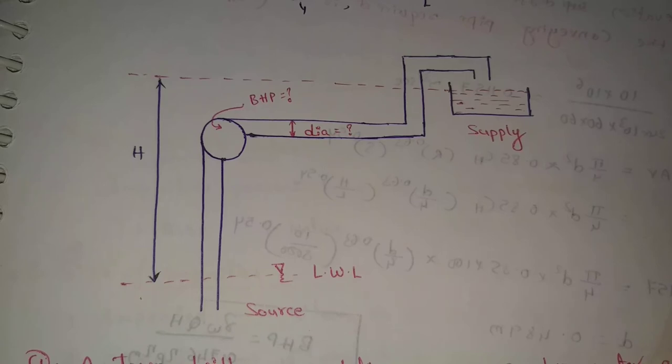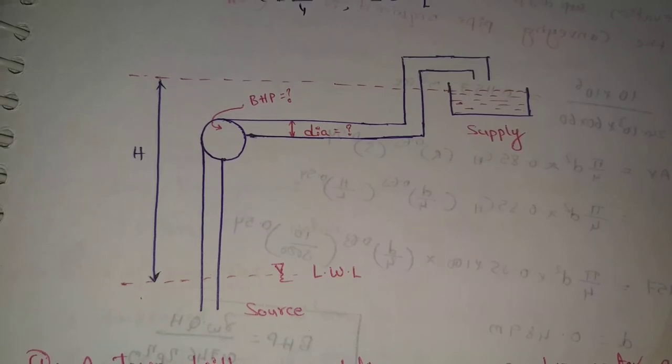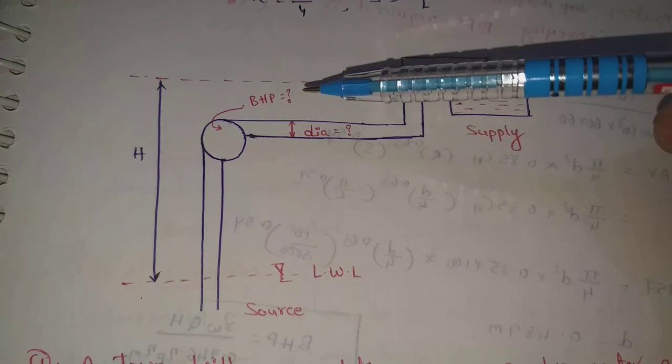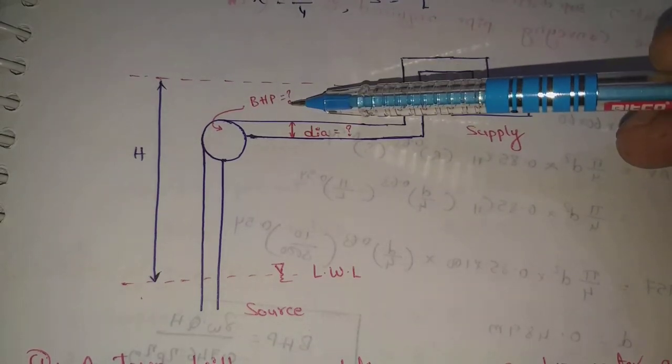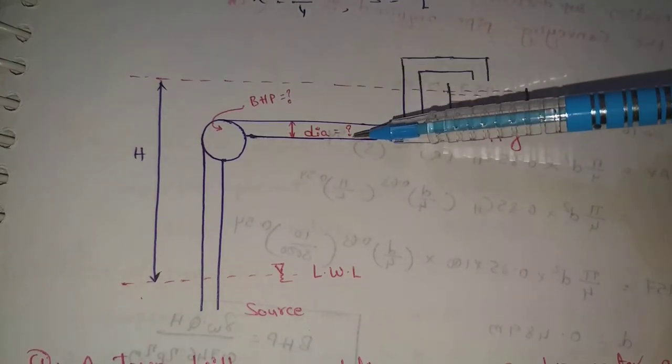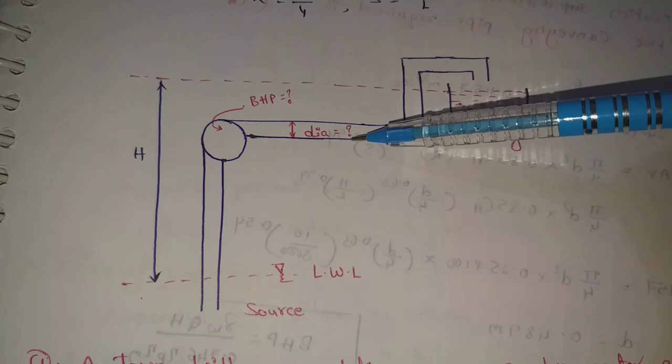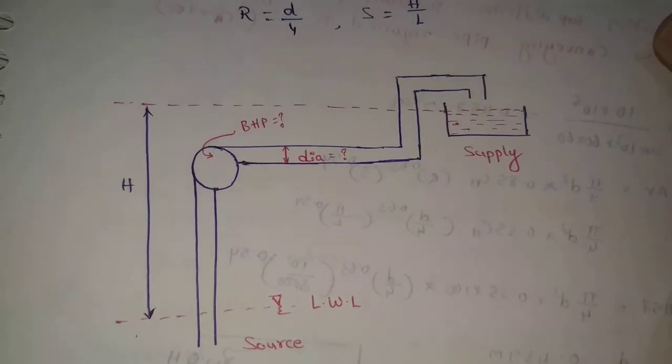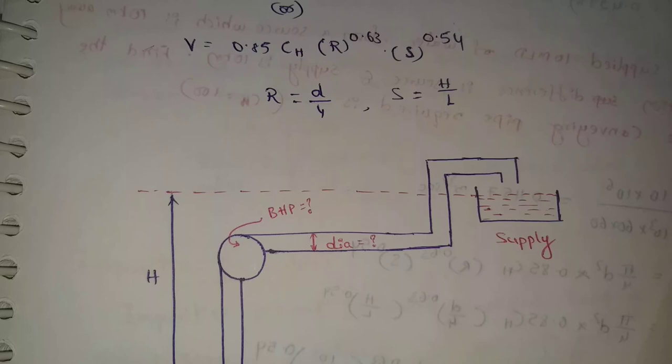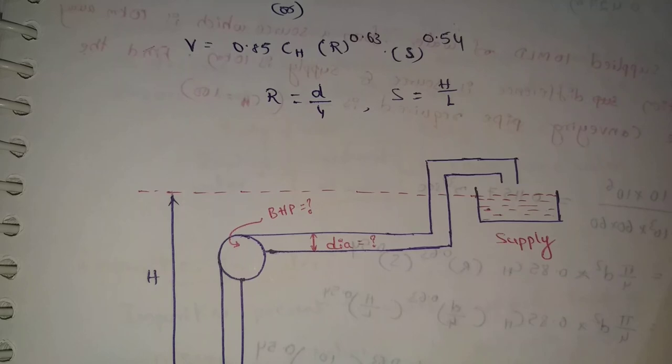I will find out the next problem: BHP, break horse power, or diameter of the pipe. So this is conveyance of water, the design of pressure conveyance. Please like this video and don't forget to subscribe to my channel. Thanks for watching.